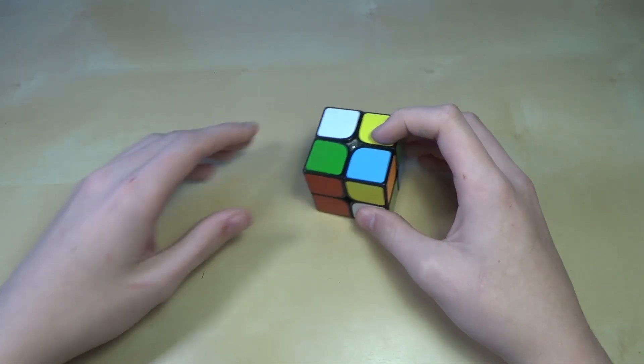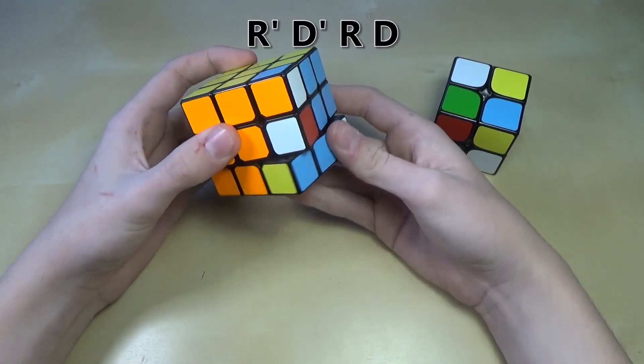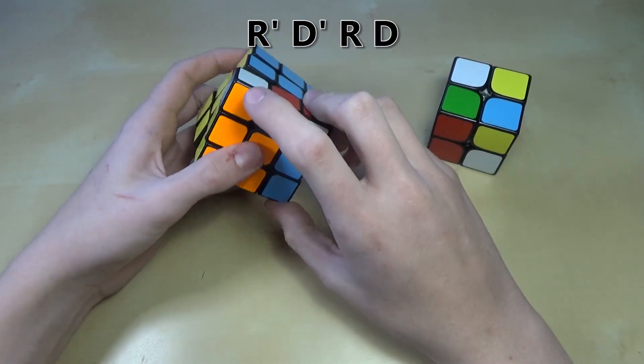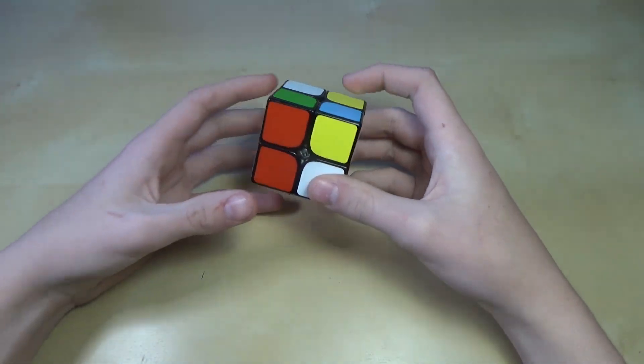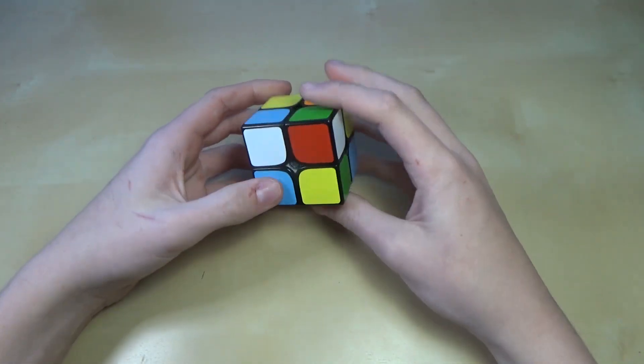So there's one very basic algorithm that you would have learned on the 3x3. It's R prime, D prime, R, D. And it's basically used for getting pieces from down here, up here. So by doing them in certain ways, you can get corners from down here to up here. And since all that this puzzle is, is corners, it's pretty easy to use that on this cube.